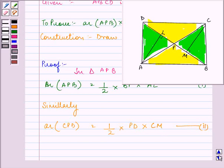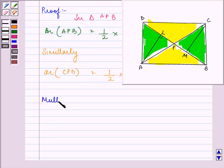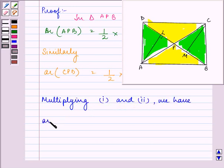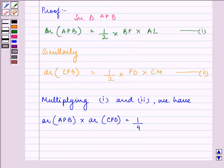Now multiplying equation 1 and 2, we have area of APB into area of CPD is equal to 1/4 into BP into PD into AL into CM.